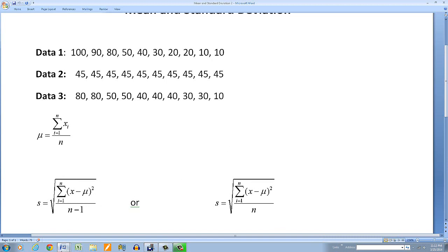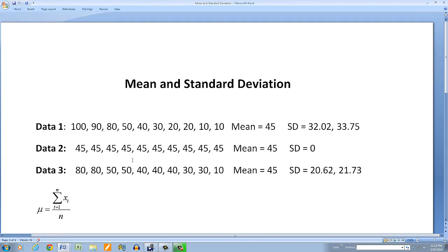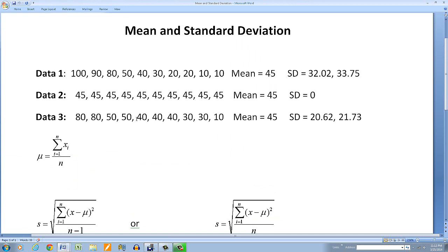So if I actually compute these, over here, the standard deviation for the first one, using both formulas, I get 32.02 and 33.75. The second one is a result of this formula right here. So I use both formulas just in case you want to know what it comes out to. So 33.75 is the standard deviation for the first set of data.